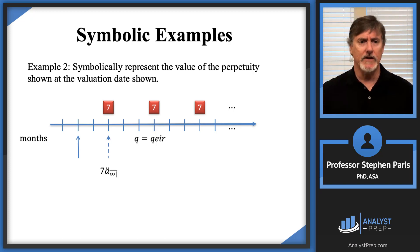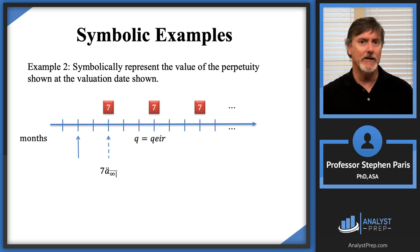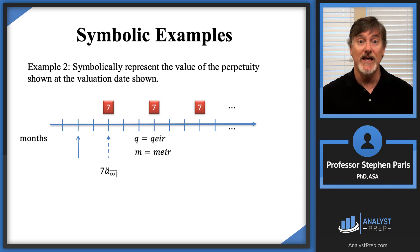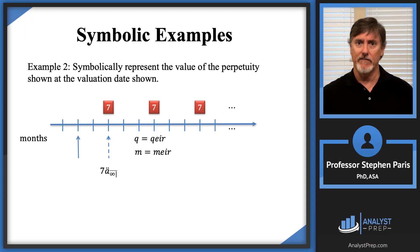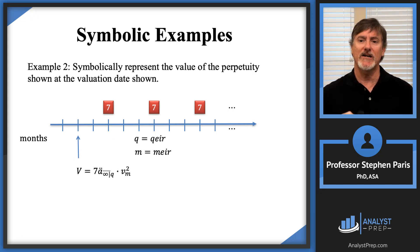Let me take the intermediate valuation date at the time of the first payment. The symbol representing the value of the perpetuity there would be seven times A-double-dot-angle-infinity. I need to discount it for two months, so I'm multiplying by V-squared — but that's months. I now need a symbol for the monthly effective interest rate; let me use M. With two interest rates, Q and M, I must be careful about what A-double-dot-angle-infinity is with respect to.